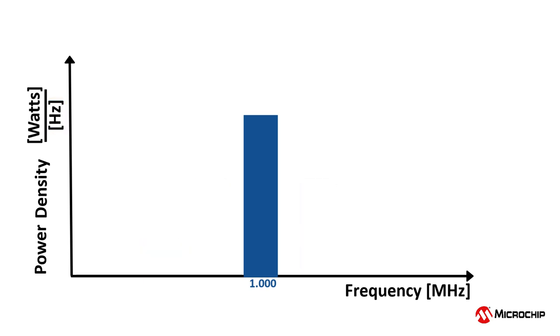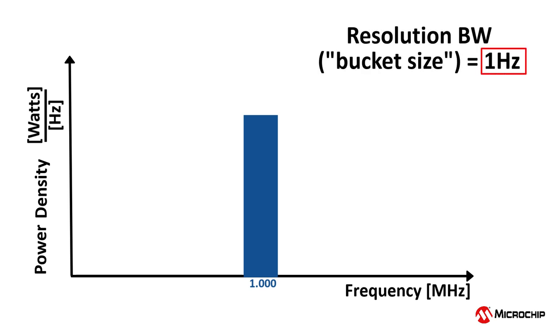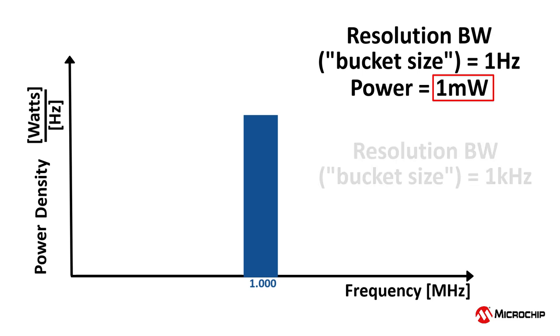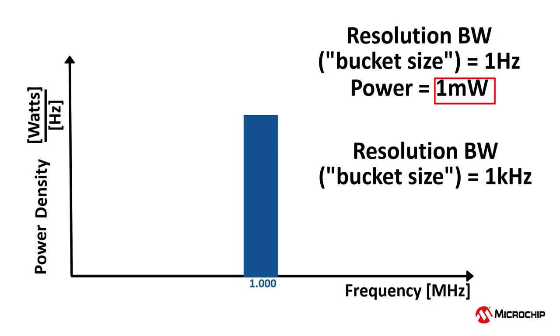To illustrate the utility of using power spectral density instead of simply power, let's consider this simple example. When this 1 MHz clock is plotted with a resolution bandwidth of 1 Hz, it shows a power of 1 mW or equivalently 0 dBm. If I increase the resolution bandwidth bucket size to be 1,000 times wider now and be 1 kHz, there is 1,000 times more power contained in the bucket, which means that the total power is now 1 Watt or 30 dBm. Obviously, I'm using power levels much higher than real signals like Wi-Fi transmission, but these high numbers help me to illustrate the concept more simply.